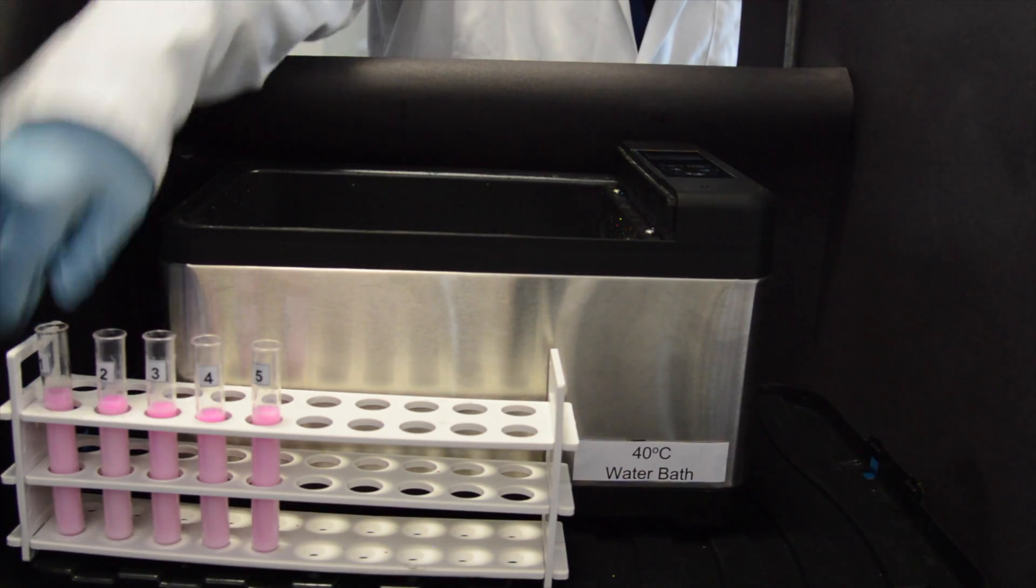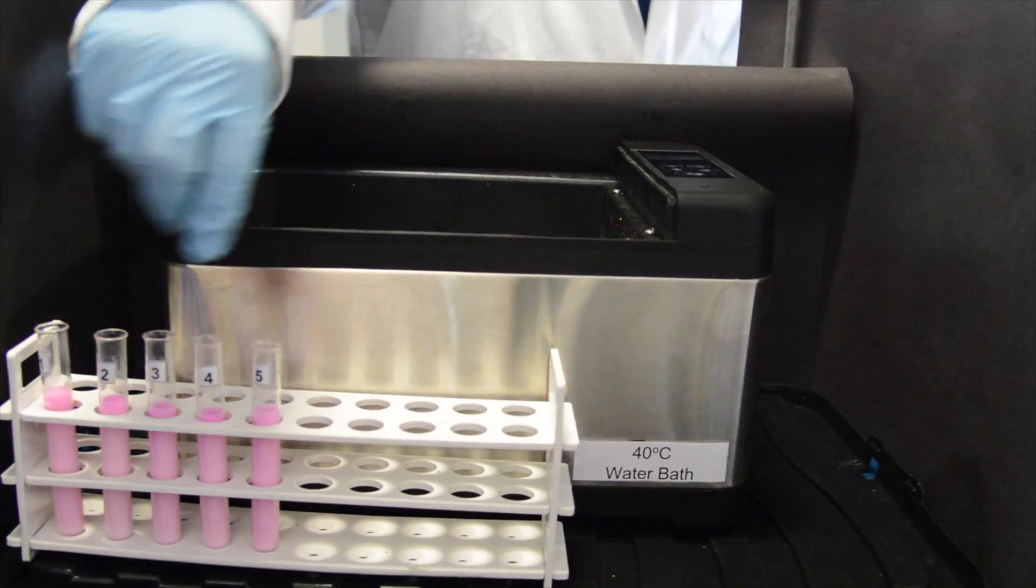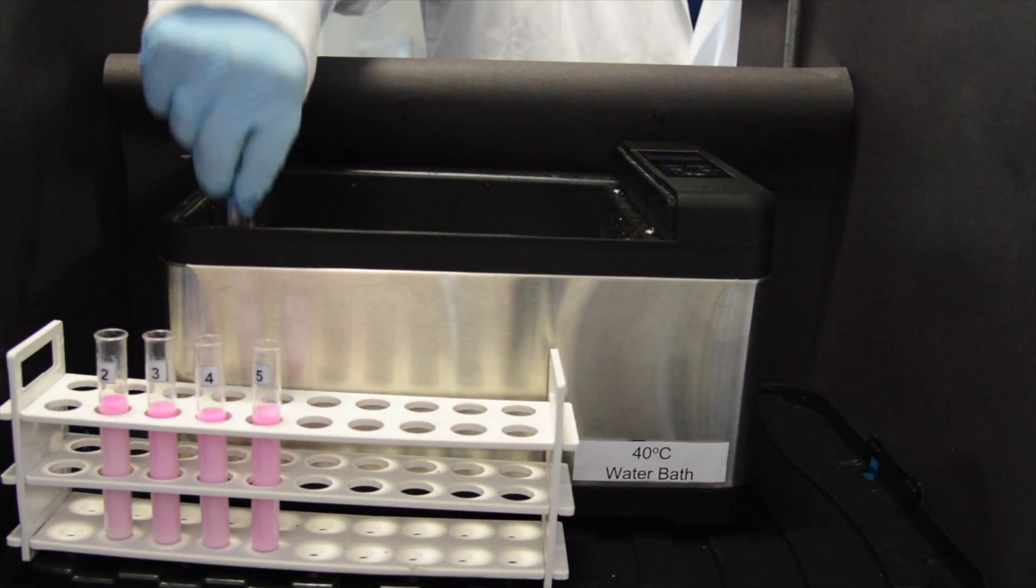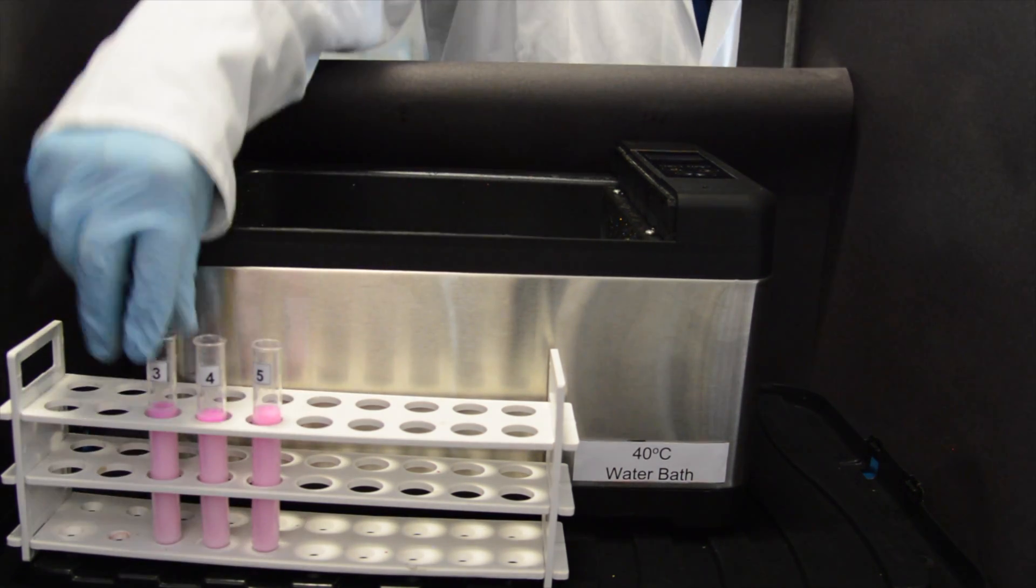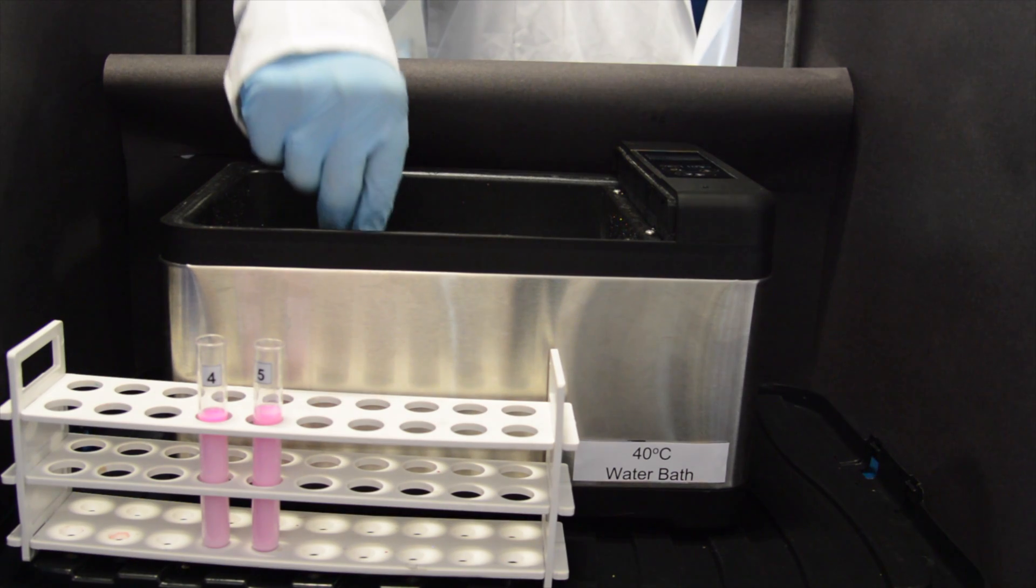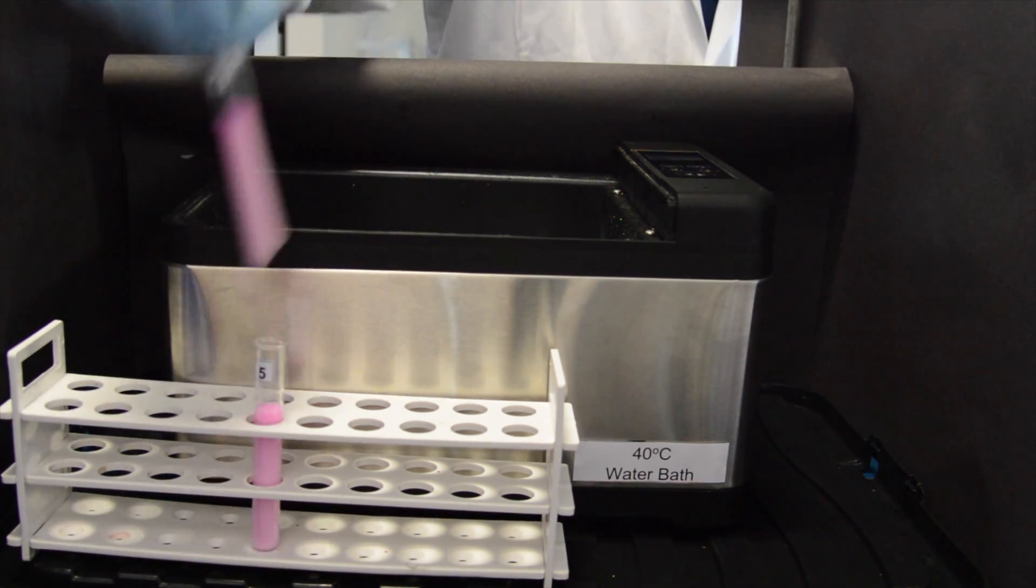All five tubes are then placed into a water bath at 40 degrees centigrade and left for approximately five minutes or until they've reached the temperature of 40 degrees centigrade. This is called equilibration.